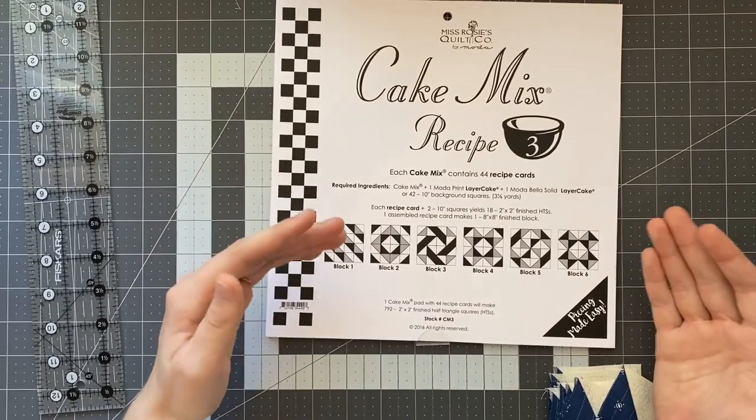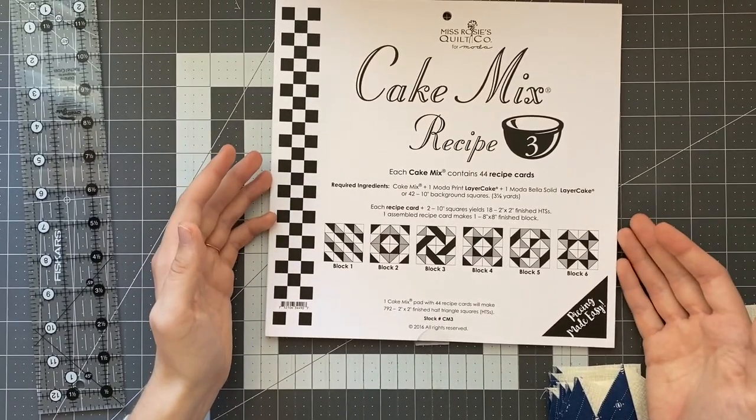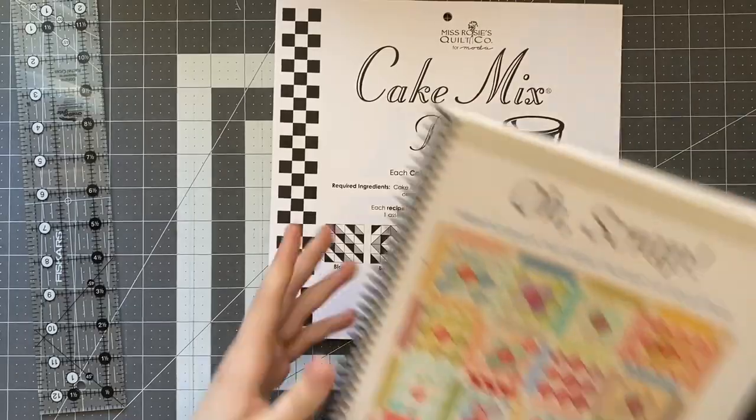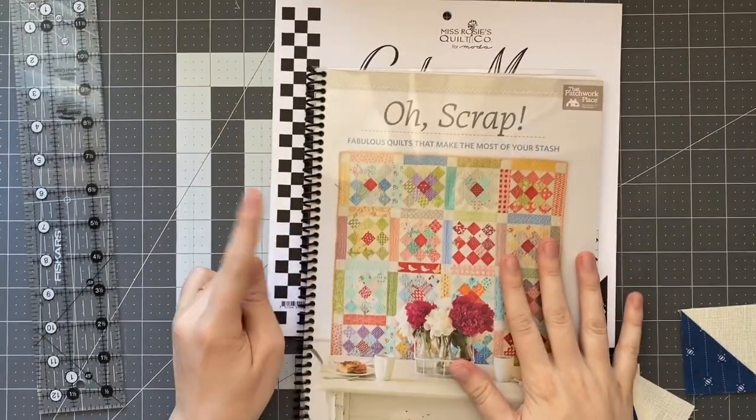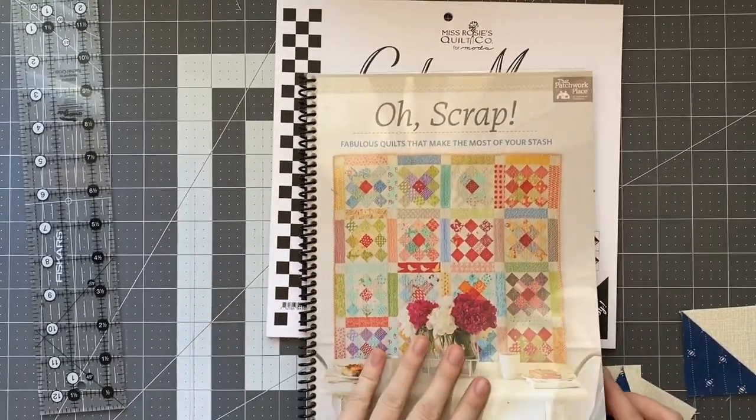The one I'm using is called Oh Scrap it doesn't come spiral bound I added that to it but I'll show you guys the pattern that I'm using so these instructions actually don't tell you to use the cake mix.